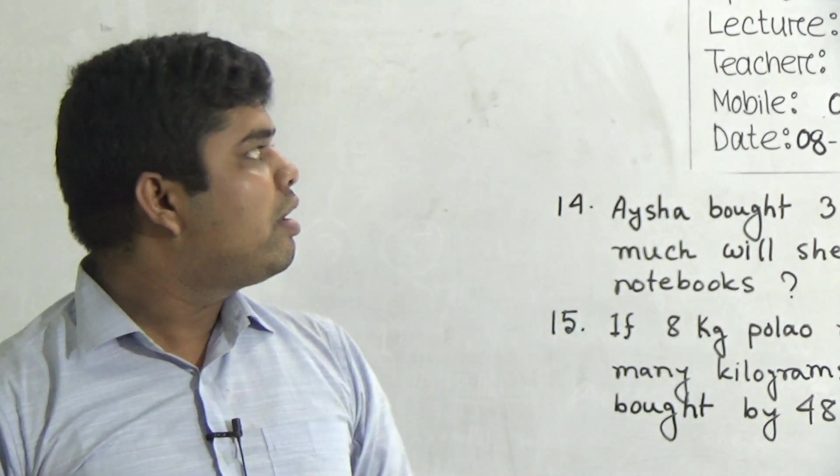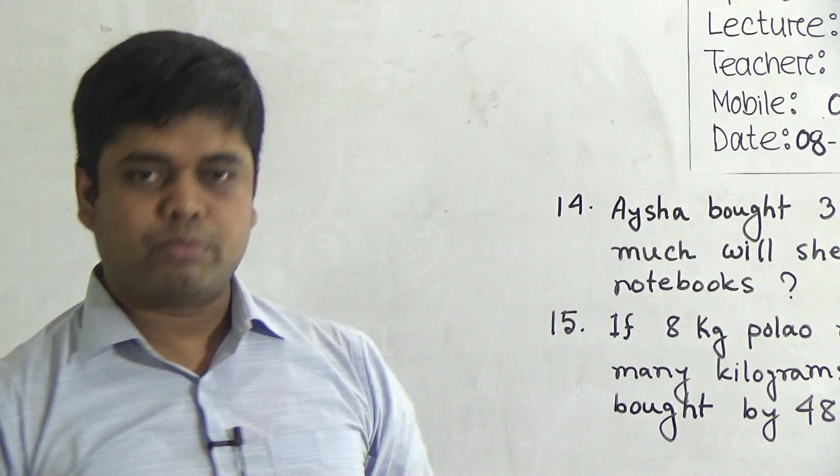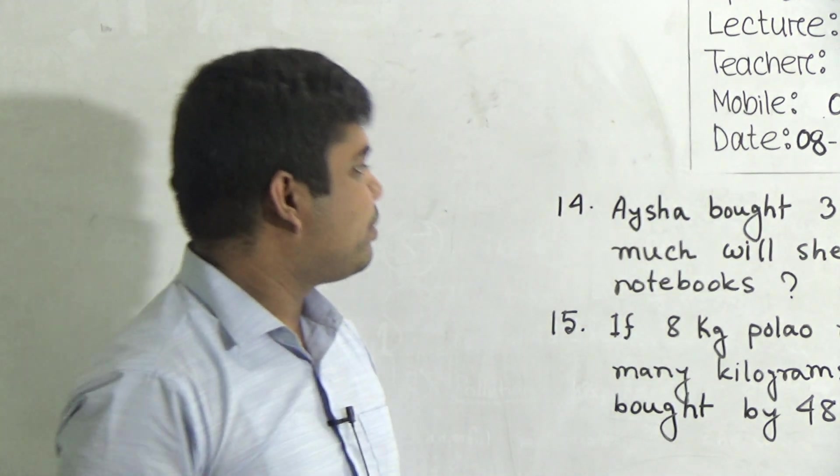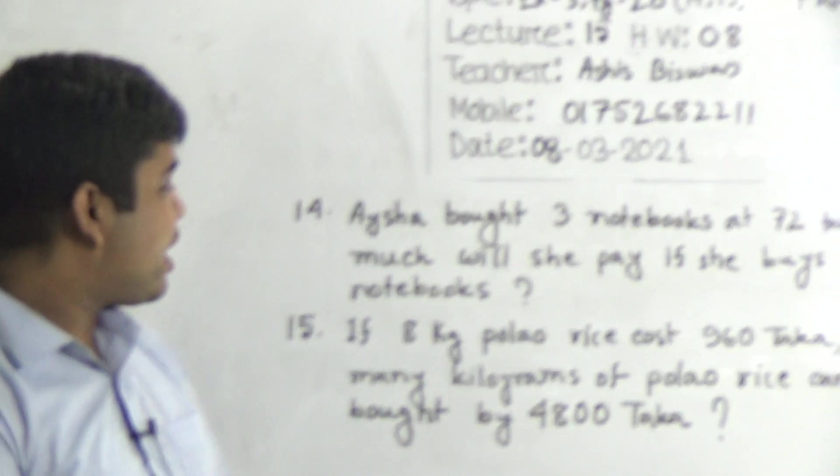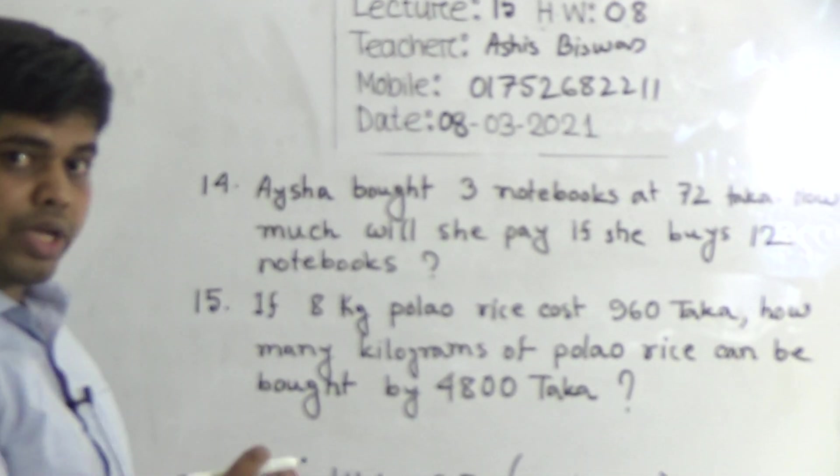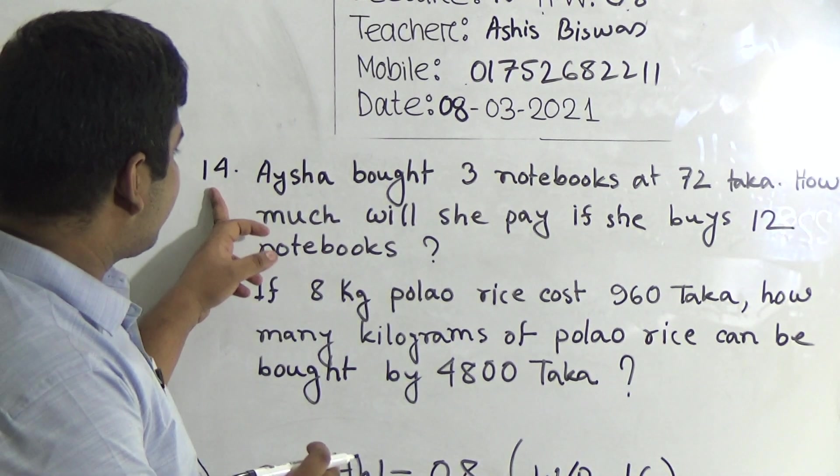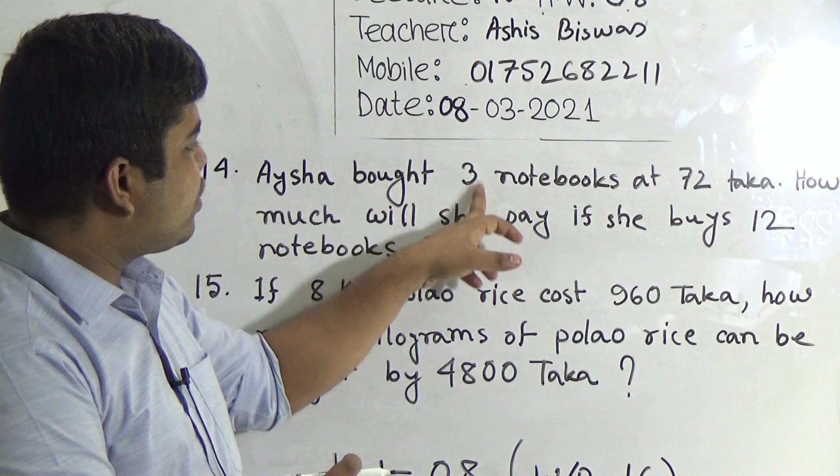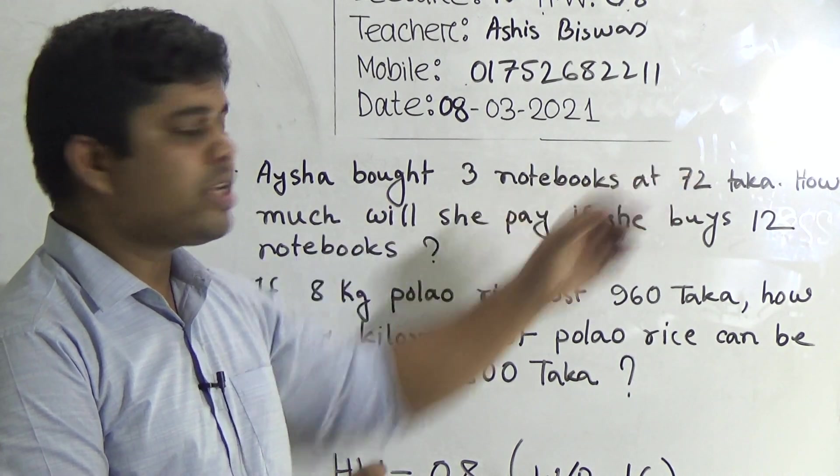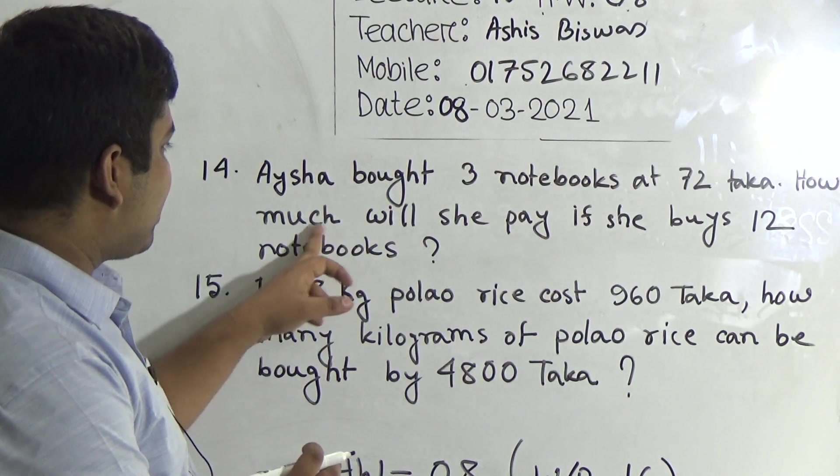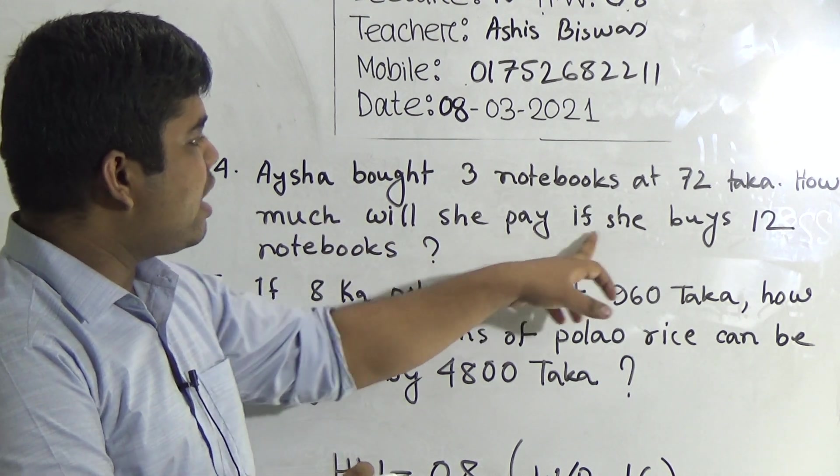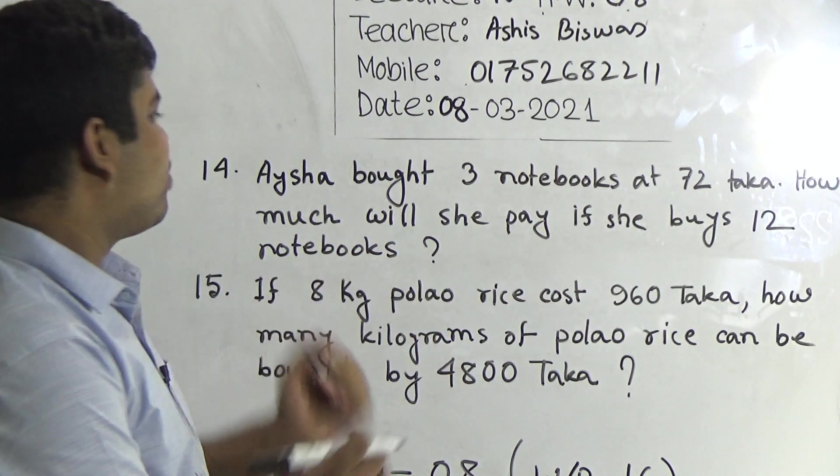I have already written these two questions on the board. So please notice the board. Easy math, 14 and 15 both. So here 14 number question: Aisha bought three notebooks at 72 taka. How much will she pay if she buys 12 notebooks?